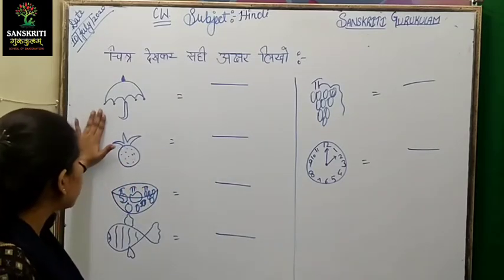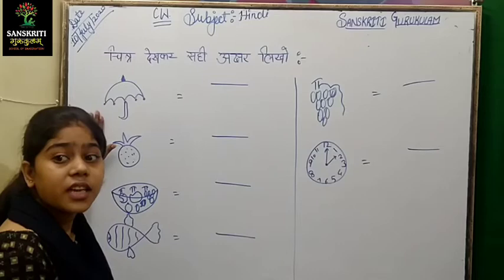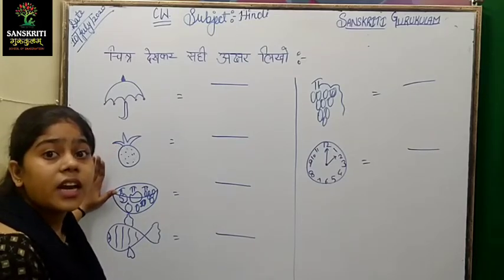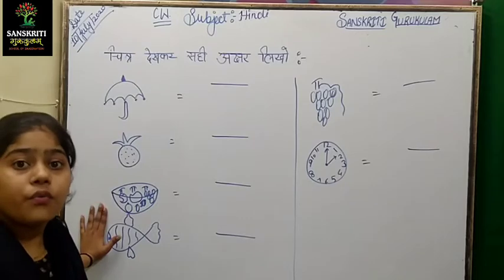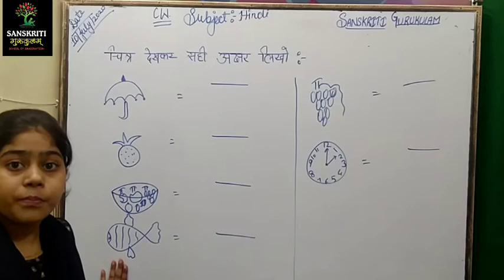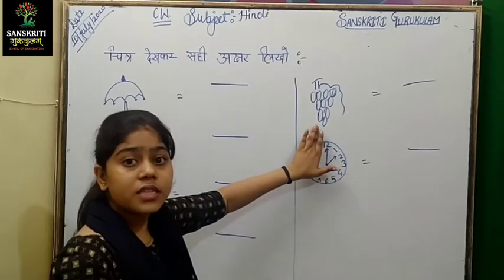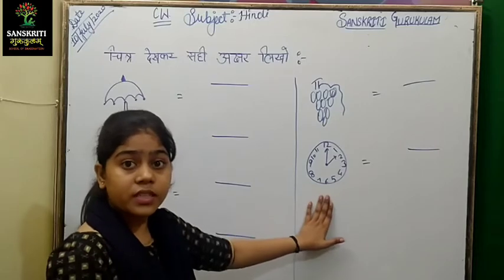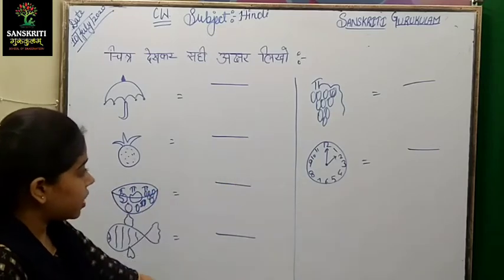पहली चित्र - चहसे चाता. पहला पिक्चर क्या है? चहसे चाता. सेकेंड पिक्चर है असे अनार. थर्ड है फासे फल. फोर्थ है मासे मचली. अंगसे अंगूर. खसे खड़ी. इसी तरीके से आपको पहले पिक्चर को पहचानना है उसके बाद अक्षर को लिखना है.